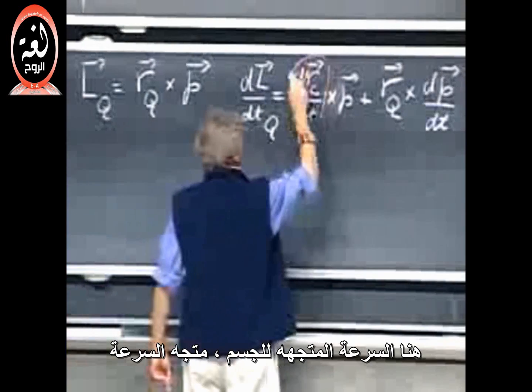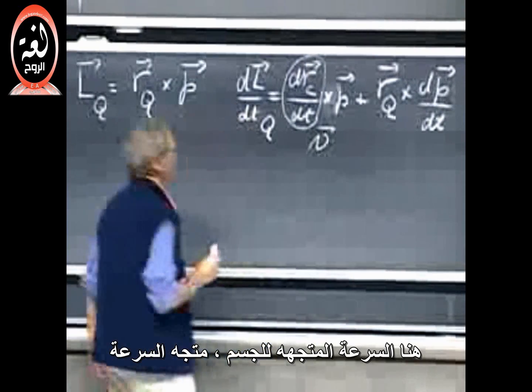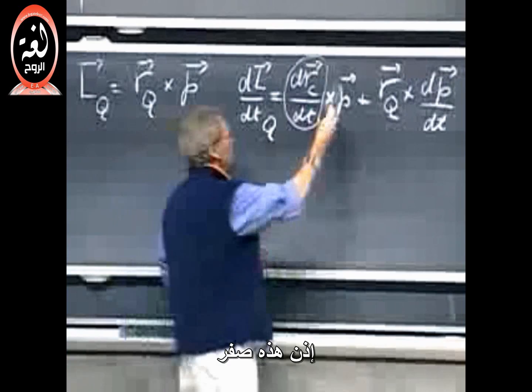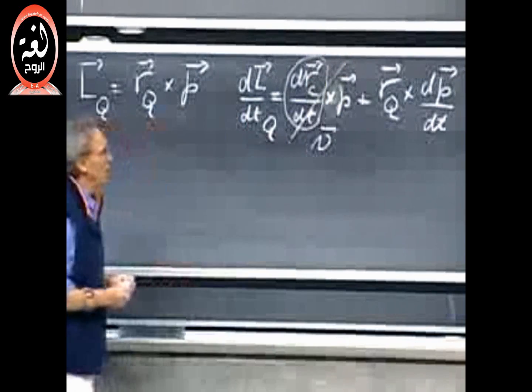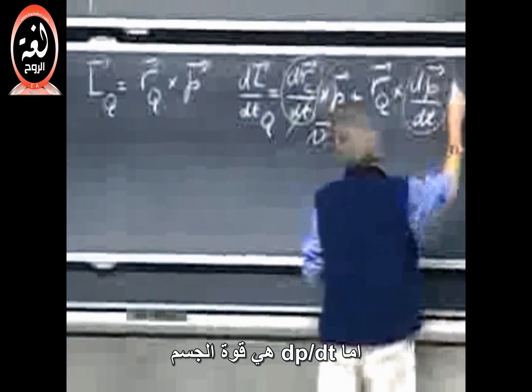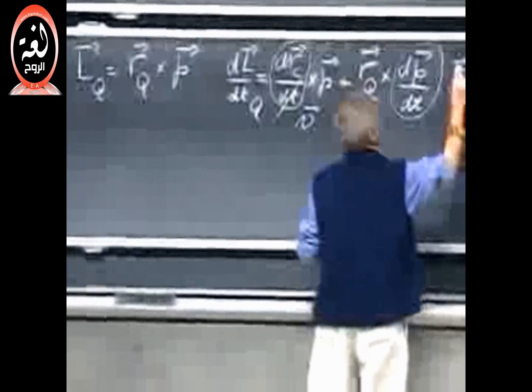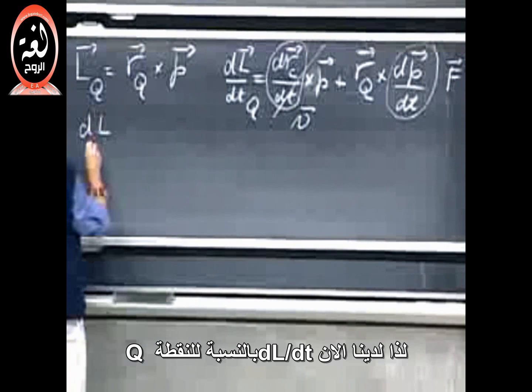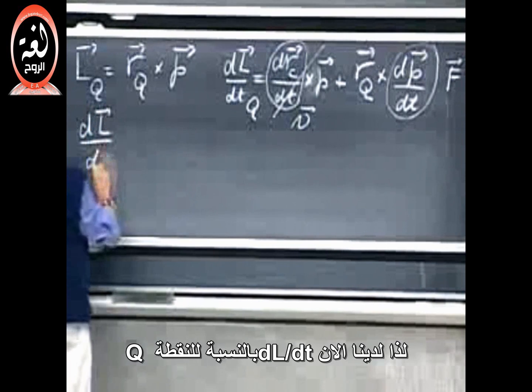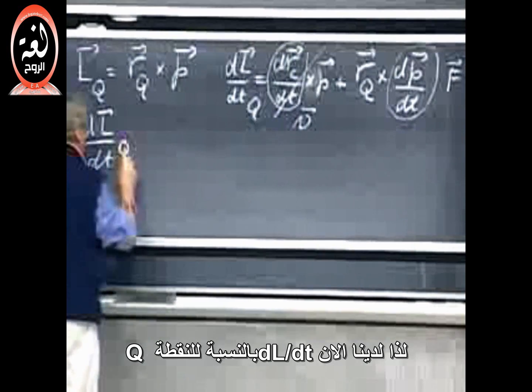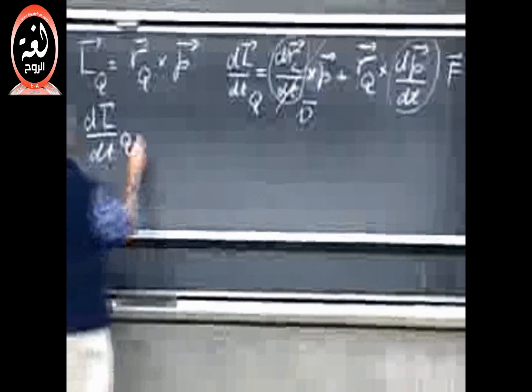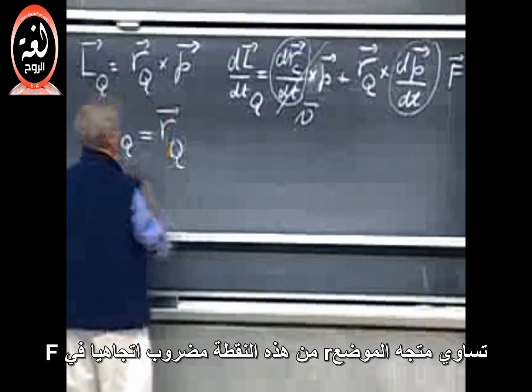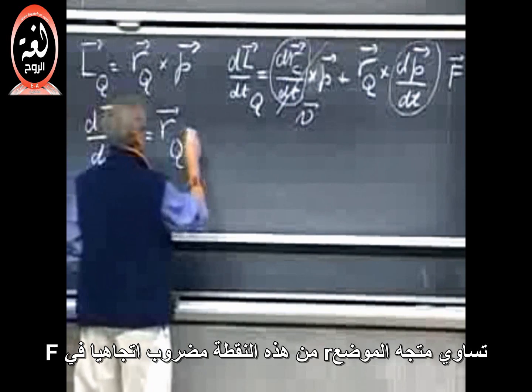This here is the velocity of the object, the velocity vector, which is always in the same direction as P. So this is zero. dP/dt, that is the force on the object. We've seen that before in 801. And so now we have that dL/dt relative to a point Q equals the position vector R from that point cross F.